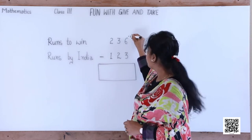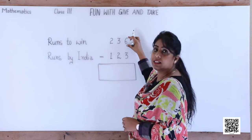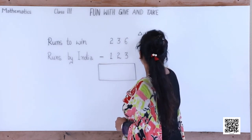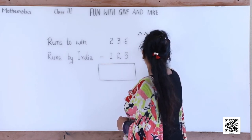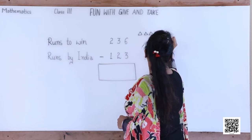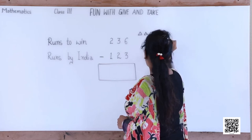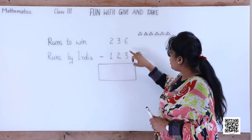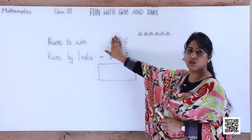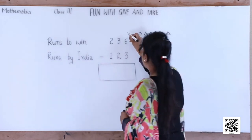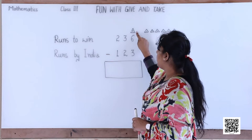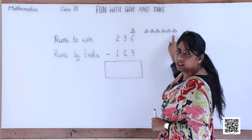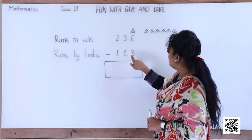Let's look at this figure — this is 236, so the last digit is 6. How many triangles will be made for ones? Yes, we will make six triangles: one, two, three, four, five and six. These are all for ones, so this is the ones line. We are concentrating only on ones and denoting them with triangles.